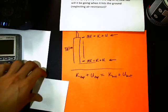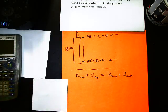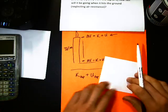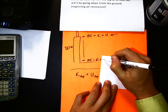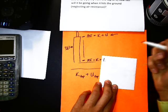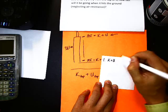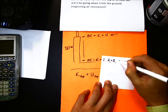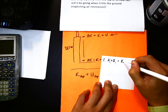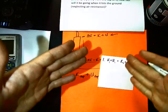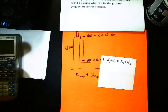However much energy it has at the top is the same amount of energy it has at the bottom. Energy cannot be created nor destroyed, however you want to think about it, that's what it is. So, combining these two, we have kinetic at the top of the Empire State Building, plus the potential at the top, equals the kinetic energy at the bottom, plus the potential at the bottom.